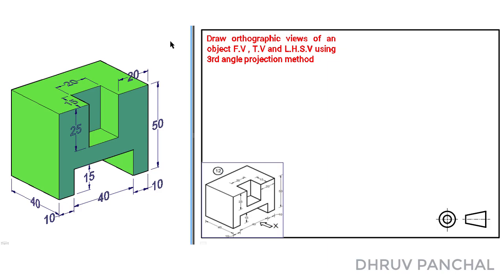Hello friends. In engineering drawing subject, today we are going to learn how to draw different orthographic views of a given 3D object with respect to direction of view. Here is our data for the problem: draw orthographic views of an object — front view, top view, and left hand side view using the third angle projection method.